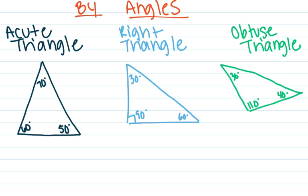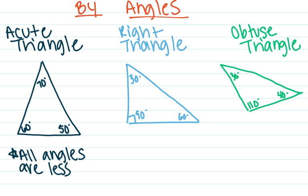First of all, let's talk about how we can give a name to a triangle. There are two ways. One is to use the angles inside the triangle. If we have an acute angle, that means that all of the angles in the triangle are less than 90 degrees — so that means you have an acute triangle.